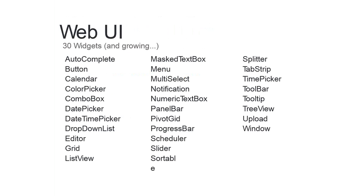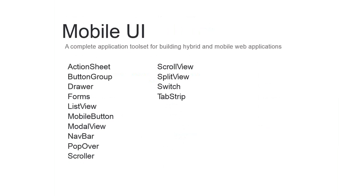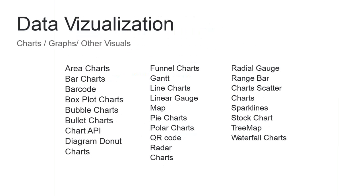The web UI has 30 widgets, and we keep adding more with each release — starting from a simple autocomplete to as complex as a scheduler or Gantt chart. The mobile UI contains a complete application tool set for building hybrid and mobile web applications, from a simple action sheet to a complex mobile list view. Data visualization covers charts, graphs, area charts, radar, waterfall, QR code generation, and more.